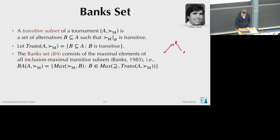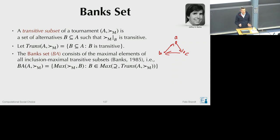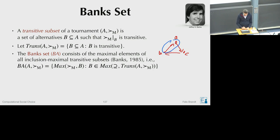For example, in the three-cycle with alternatives A, B, C: the entire set is not transitive, so the inclusion-maximal transitive subsets are all two-element subsets — {A,B}, {A,C}, and {B,C}. In each such subset there is a maximal element: A in one, B in another, C in the third. So the bank set returns all three alternatives {A, B, C}, which is consistent with the symmetry of this tournament.